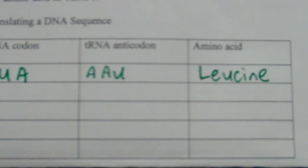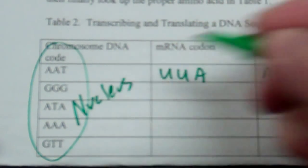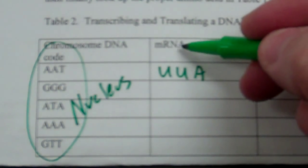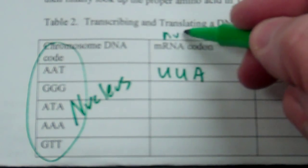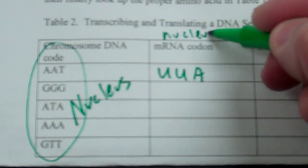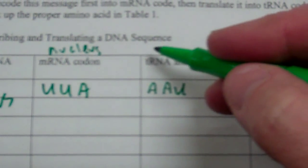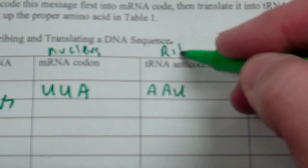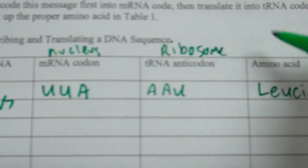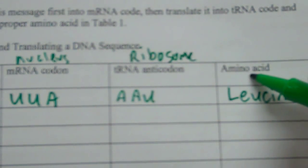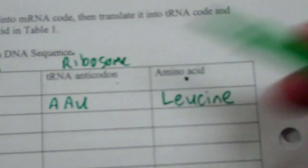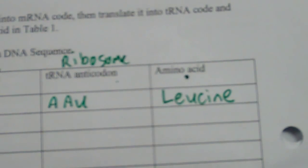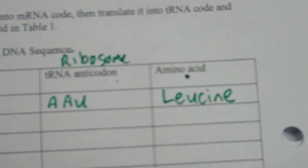So we're starting in the nucleus — this is in the nucleus — and then this is copying the code in the nucleus. Then the messenger RNA goes to the ribosome, where the tRNA is, and this amino acid is going to be carried by your tRNA. Good luck.